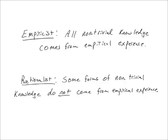Hume further argued that if a book contains neither analytic nor synthetic propositions, then we should throw the book to the flames, for it contains only nonsense. Hume is considered an empiricist because he believed all non-trivial knowledge comes from empirical experience. Rationalists, on the other hand, believe some non-trivial forms of knowledge come from mere thinking alone. And Kant will synthesize these two positions and give us a third option.